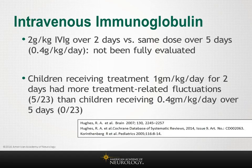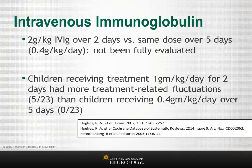The dose of intravenous immunoglobulin is 2 grams per kilogram. Whether to give it over two days — 1 gram per kilogram per day — or over five days — 0.4 grams per kilogram per day — has not been fully evaluated. There is some data in children suggesting that those who received the shorter course had more treatment-related fluctuations than those who received the longer course.